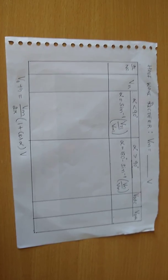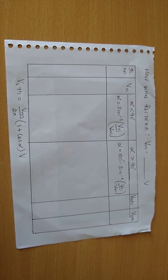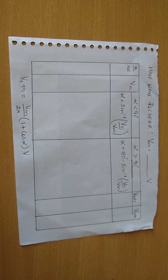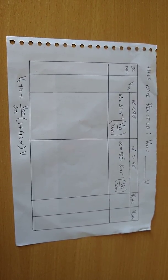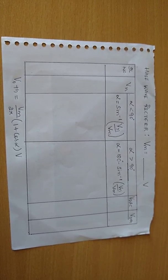If the firing angle ranges from 0 to 90 degree, then the firing angle alpha is calculated by using formula alpha equals sin inverse of VN by Vm in degrees. Vm value depends upon the Vrms value of the input transformer.